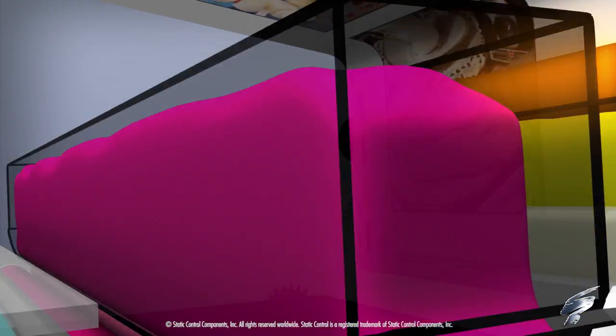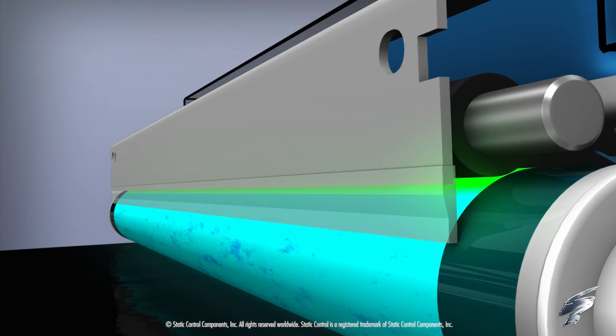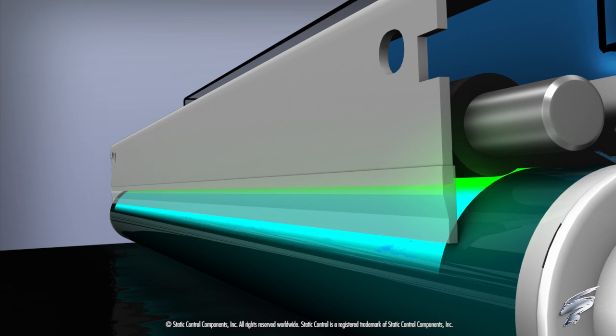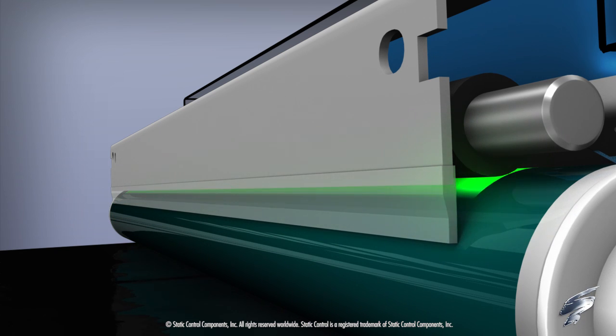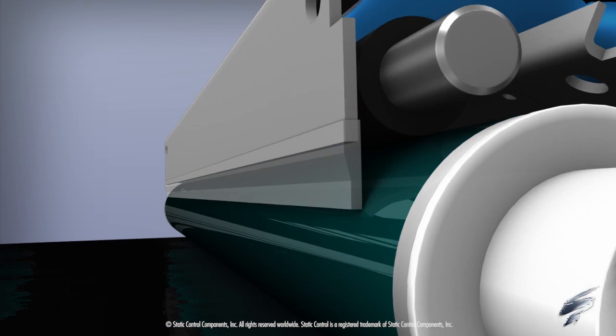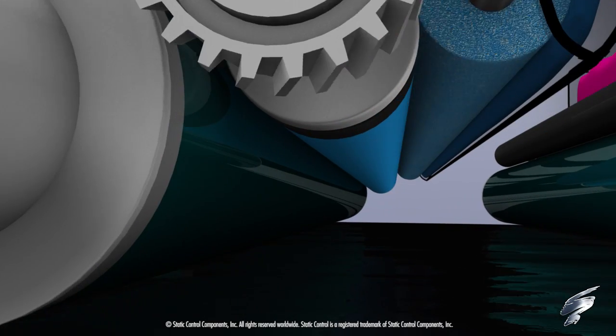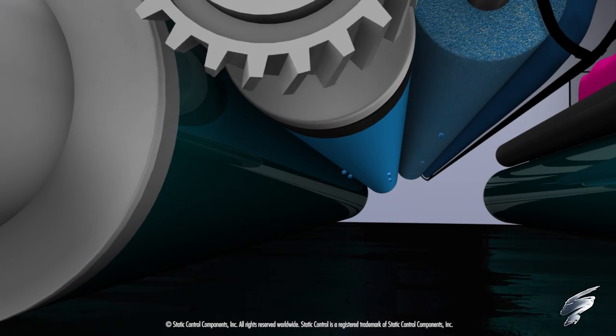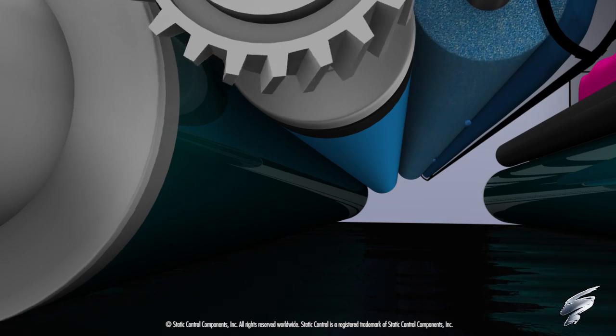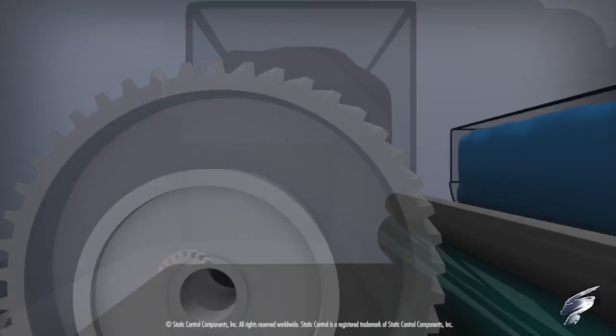Any toner remaining on the OPC drum is cleaned and moved to the waste bin by the wiper blade. The latent image on the OPC drum surface is erased by the PCR. Excess toner not transferred to the OPC drum is scrubbed from the developer roller surface by the toner adder roller and returned to the toner hopper.